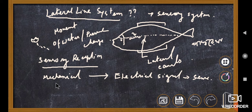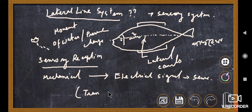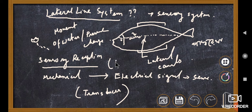What type of signal does this receptor receive? It receives a mechanical signal. That is why this receptor is called a Mechanical Receptor. And this receptor is also called a Transducer, because a transducer is a device that transfers mechanical energy into electrical energy. So since the sensory receptor receives a mechanical type signal, it is called a Mechanical Receptor.